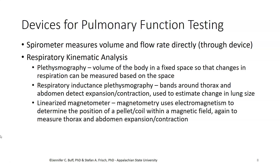In plethysmography, you have the body in a fixed space. For example, you could submerge someone up to the neck in a pool of water, and when they breathe in and expand their respiratory space, the water would be displaced — rising during inspiration and falling during expiration — so you could measure changes in respiration based on water level. That was done historically quite a while back. Respiratory inductance plethysmography uses bands around the thorax and the abdomen, which can detect expansion or contraction and be used to estimate changes in lung size and also differential use of the chest wall versus abdominal portions for breathing.